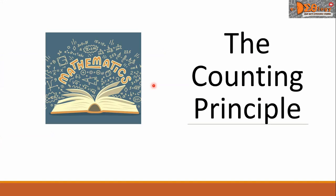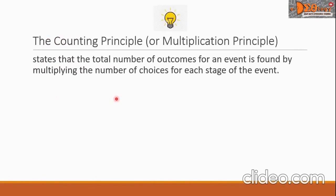Hi everyone, today we are going to study the Counting Principle. Let us study the Counting Principle, or sometimes called Multiplication Principle. The Counting Principle states that the total number of outcomes for an event is found by multiplying the number of choices for each stage of the event.